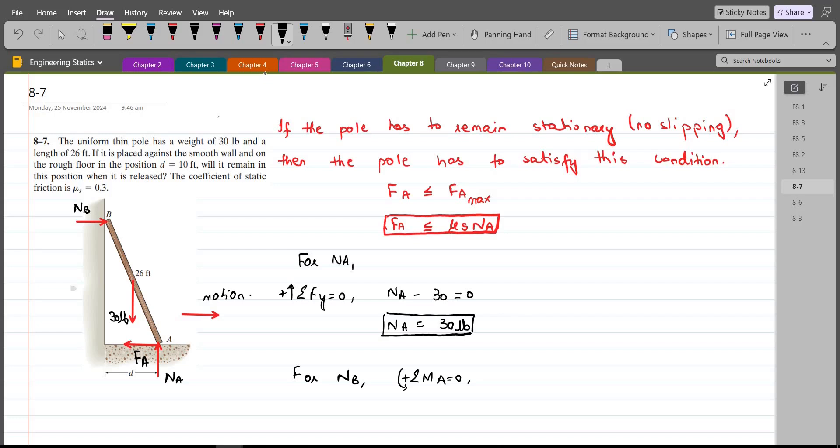This 30 lb force is trying to rotate the pole in counterclockwise direction about point A, so the moment produced by this 30 lb force will be taken as positive. For the moment arm, if I extend this 30 lb force then this perpendicular distance is the moment arm for the 30 lb force.